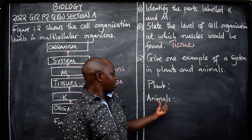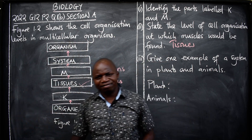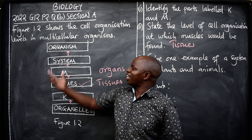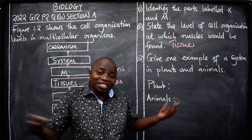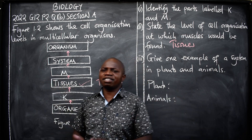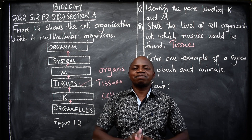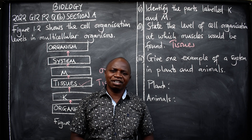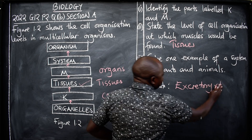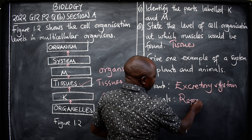Next question: give one example of a system in plants and one in animals. We have different systems in our body and also different systems in plants. For animals, you can say the digestive system — or the excretory system, the nervous system, or the reproductive system. Any of those systems will earn you marks.